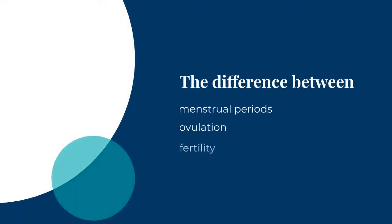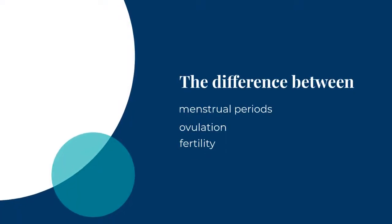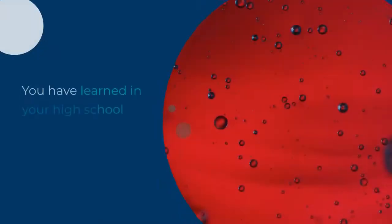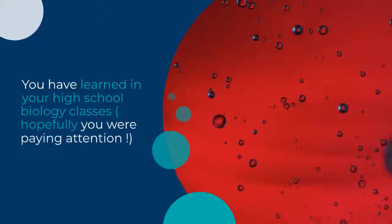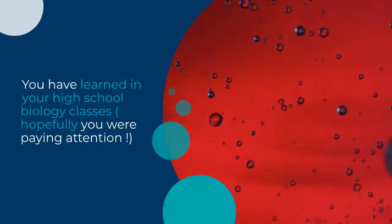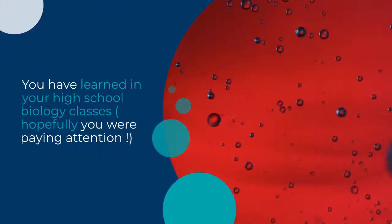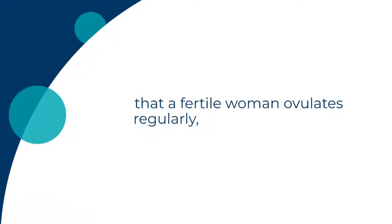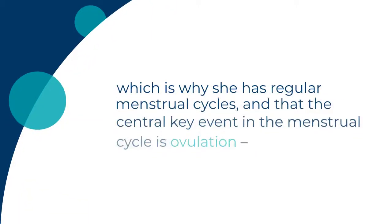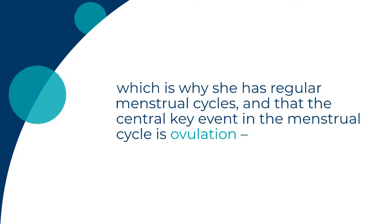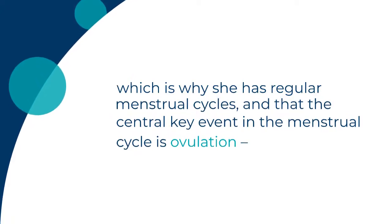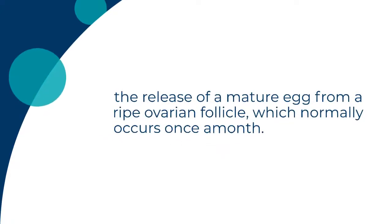The difference between menstrual periods, ovulation, and fertility. You have learned in your high school biology classes, hopefully you were paying attention, that a fertile woman ovulates regularly, which is why she has regular menstrual cycles. The central key event in the menstrual cycle is ovulation — the release of a mature egg from a ripe ovarian follicle — which normally occurs once a month.